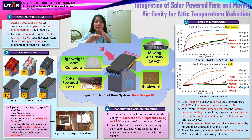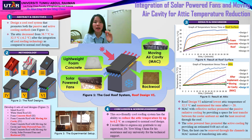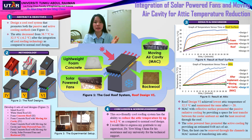The attic is placed under the roof and it is always the hottest space in the building. The basic model of my FYP is modelling half a roof attic. In this project, solar power fans and moving air cavity were integrated into my roof model, which is called the co-roof system, to reduce the attic temperature.